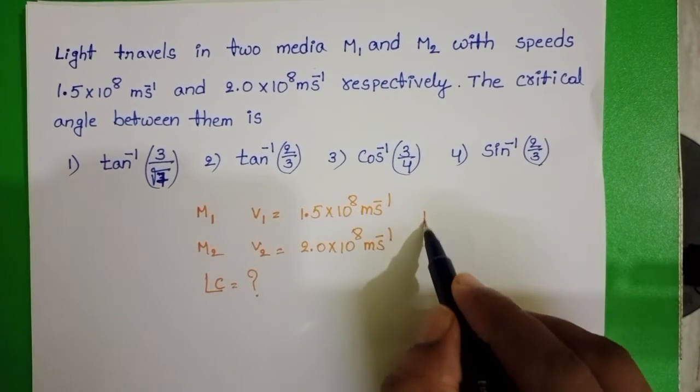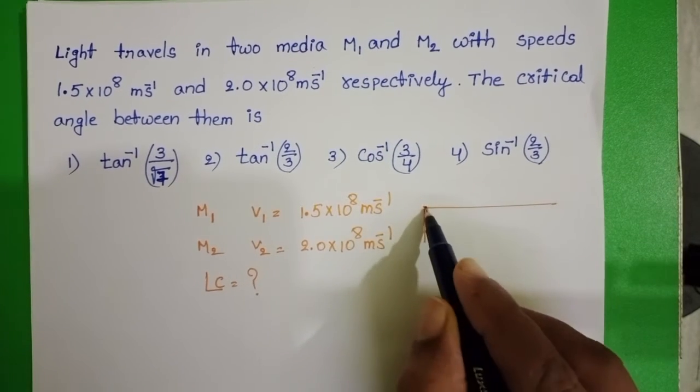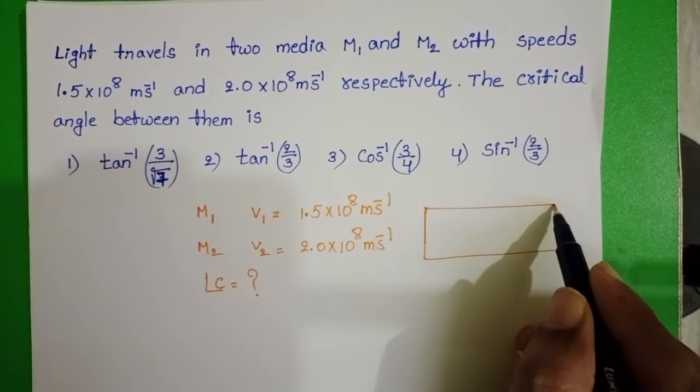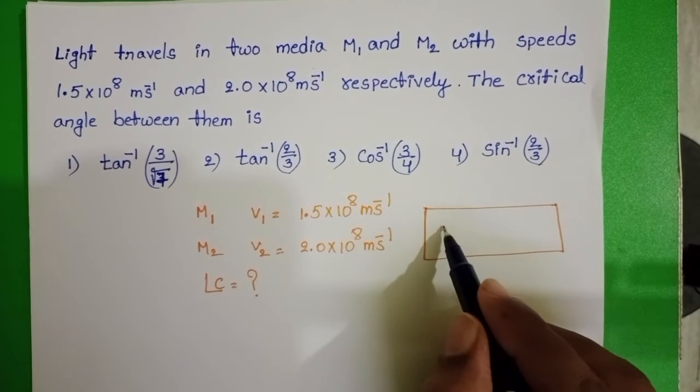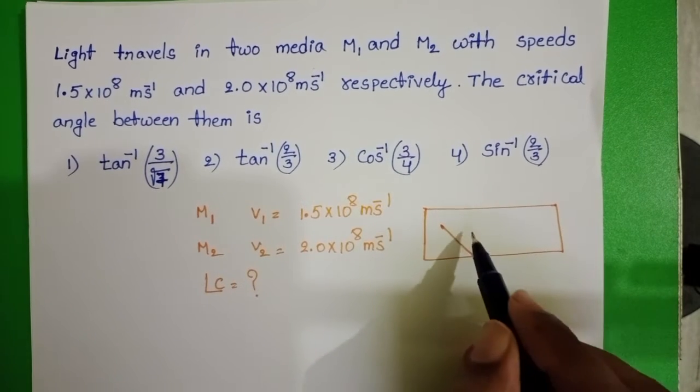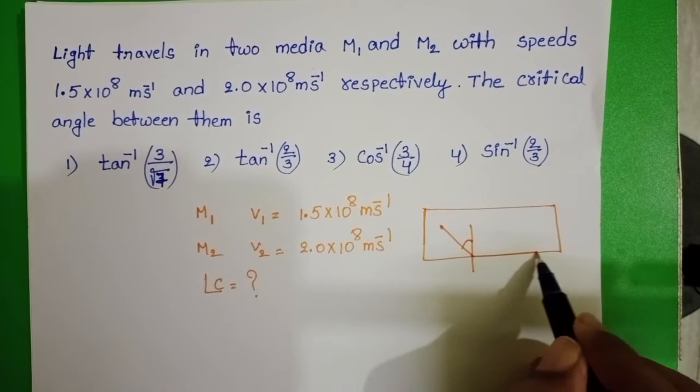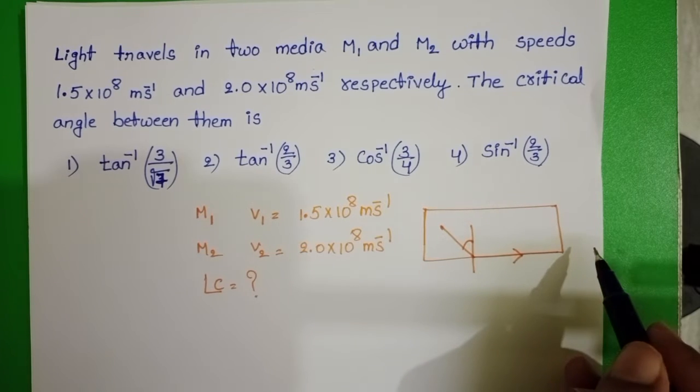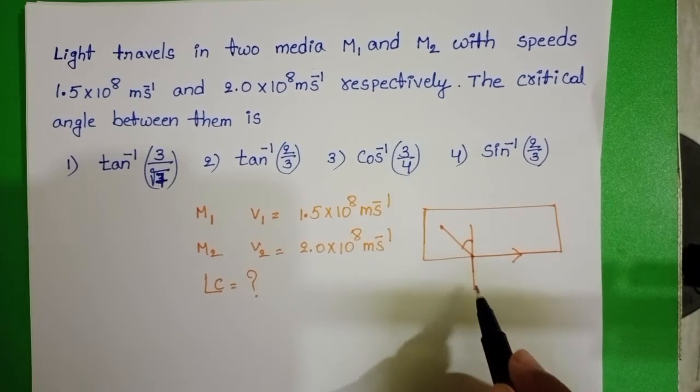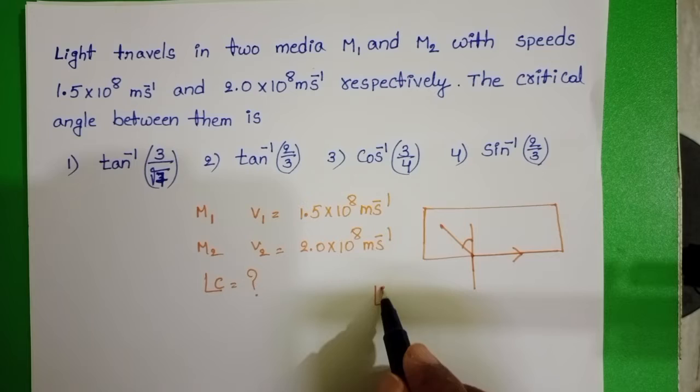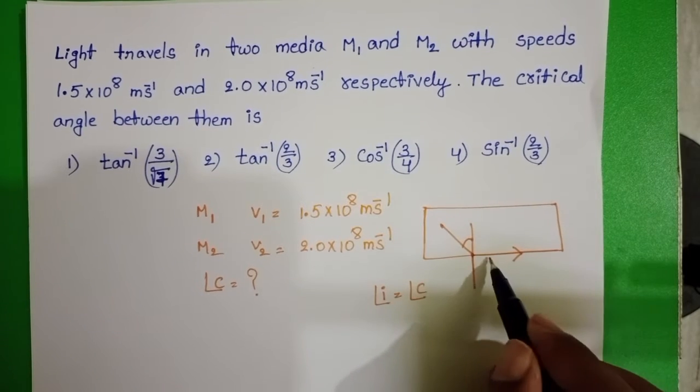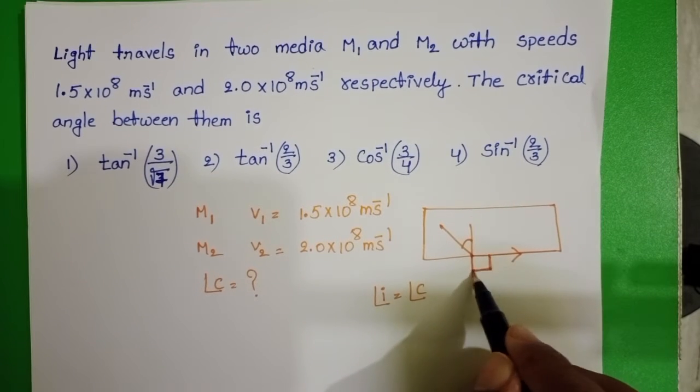What is critical angle? When a light ray travels from denser medium to rarer medium at a particular angle of incidence, the refracted ray grazes along the interface. This is called critical angle. So at critical angle, angle of refraction is 90 degrees.